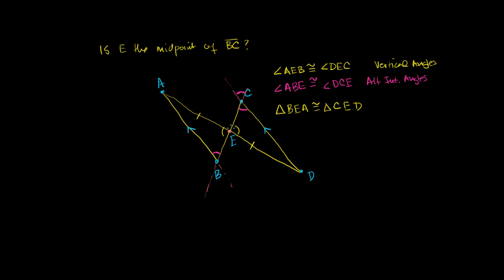And they correspond to each other. Magenta, green, side. Magenta, green, side. They're all congruent. So this is from AAS.